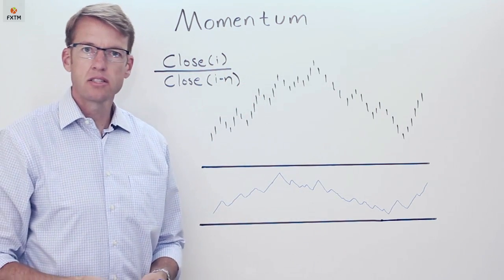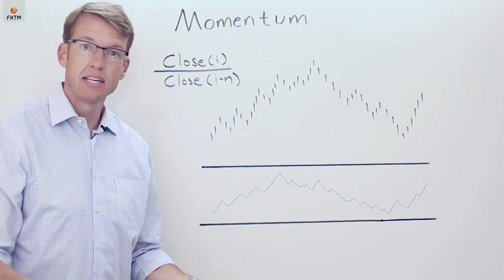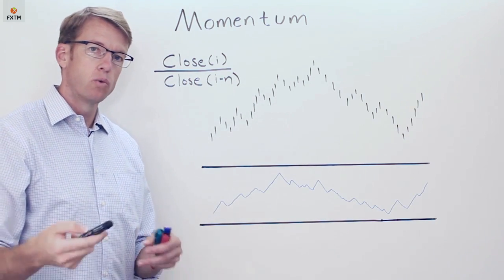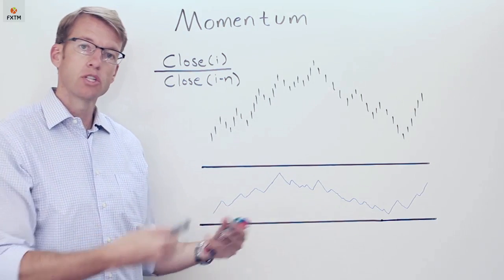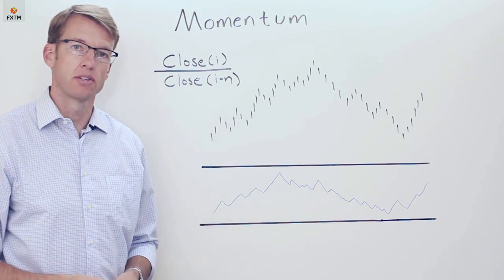So for example it will tell us what the close price from today's bar looks like relative to the close price of the bar n periods ago which by default is 14 periods ago.